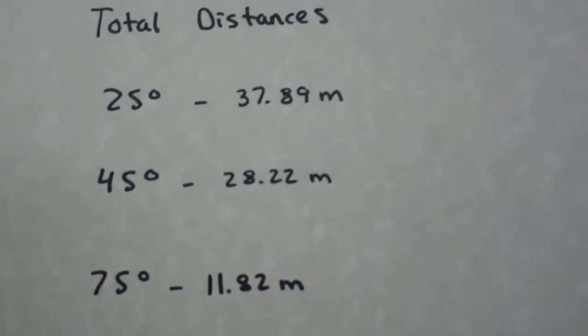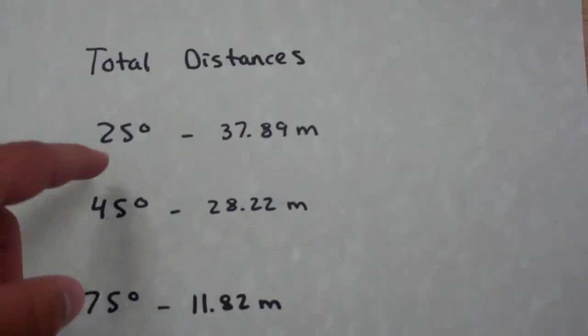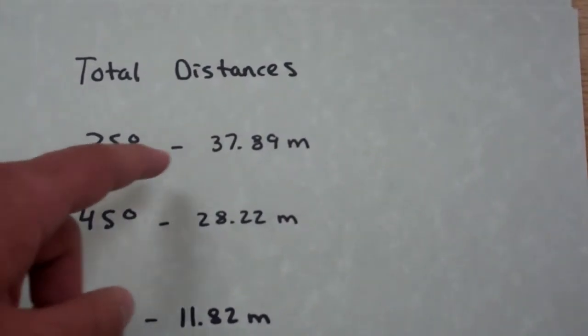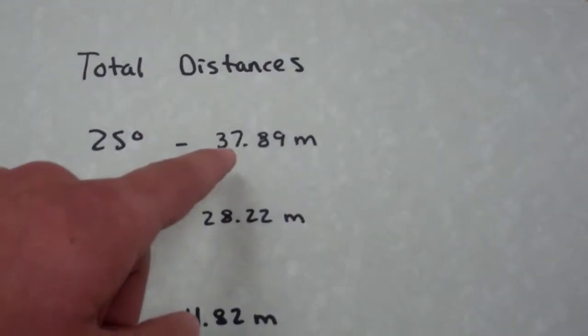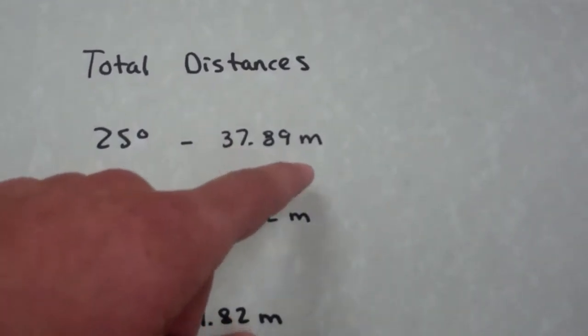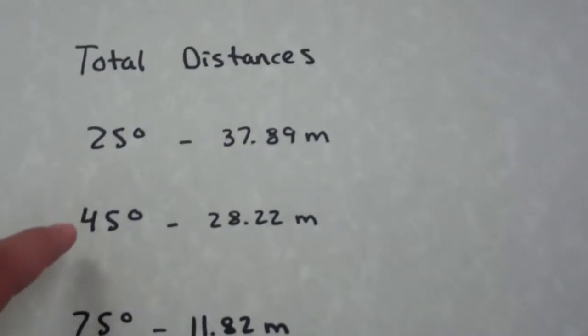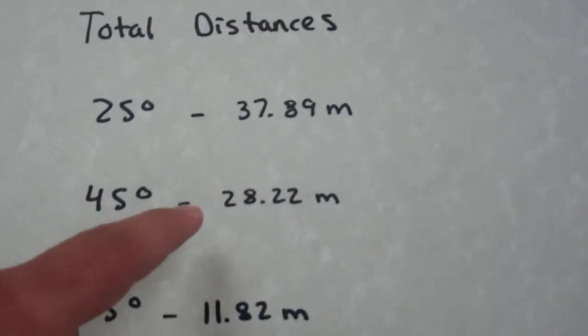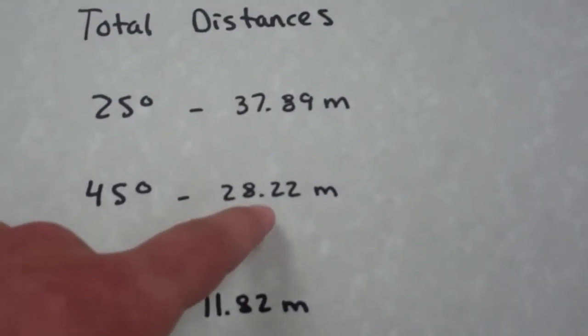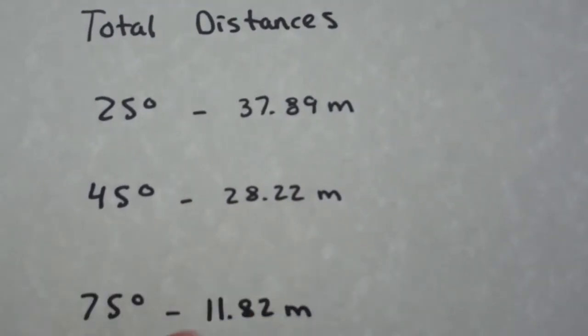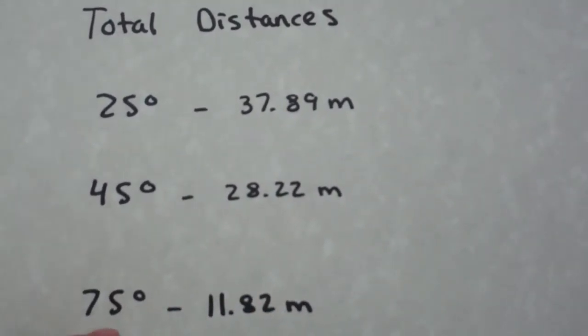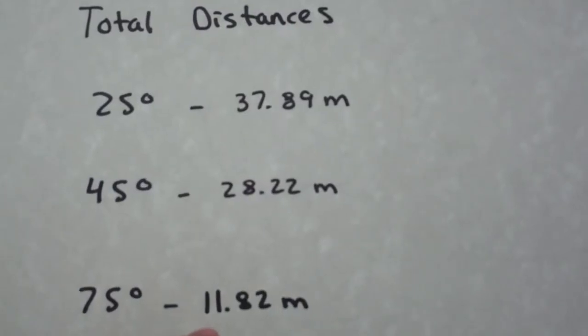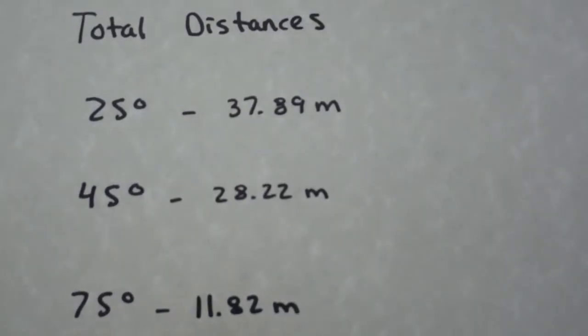Here were our total distances. The 25 degrees traveled 37.89 meters. The 45 degrees traveled 28.22 meters. The 75 degrees traveled 11.82 meters.